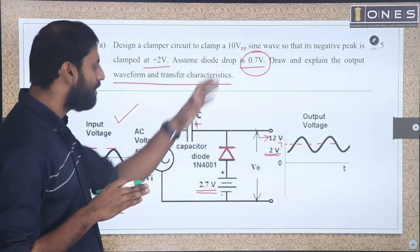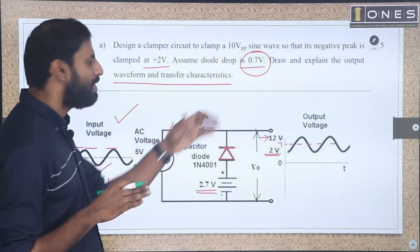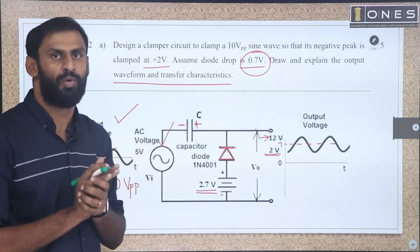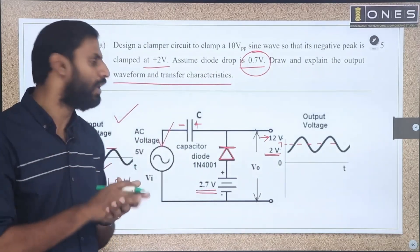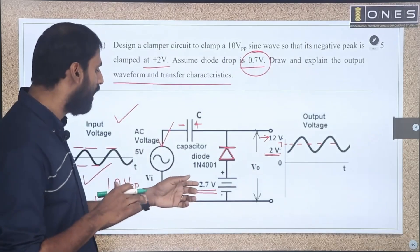So 2.7 minus 0.7 gives us the net bias effect, and 2.7 volts is used in the circuit.